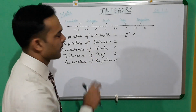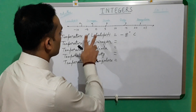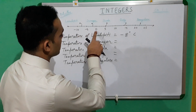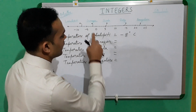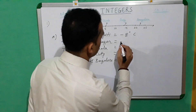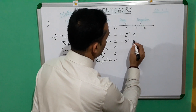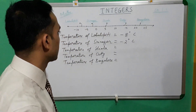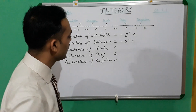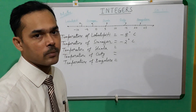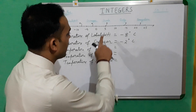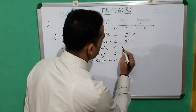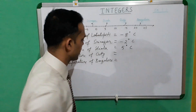Now let us see what is the temperature of Srinagar. The temperature of Srinagar is lying between 0 and minus 5. Counting: 0, minus 1, minus 2. That is why the temperature of Srinagar is minus 2 degrees Celsius. Now let us talk about the temperature of Shimla. Shimla is on 5, so the temperature of Shimla is 5 degrees Celsius.